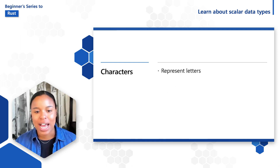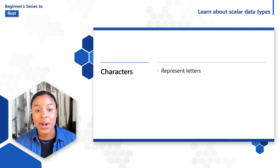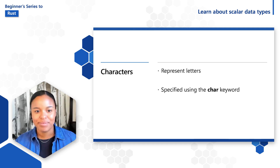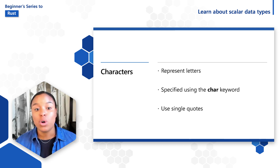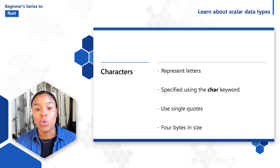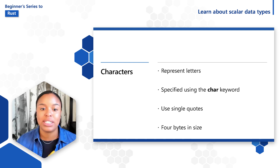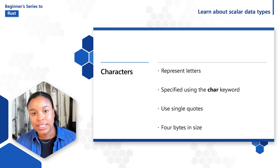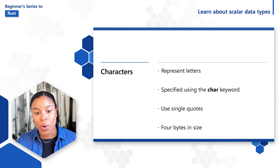The character type is used to represent letters. It is specified using the char keyword, and character literals are specified with single quotes as opposed to string literals which use double quotes. Character types are four bytes in size and represent a Unicode scalar value, which can include a single letter, accented letters, emojis, and more.